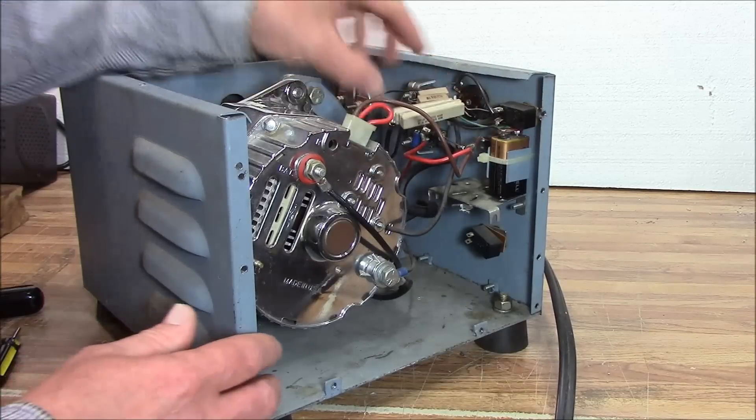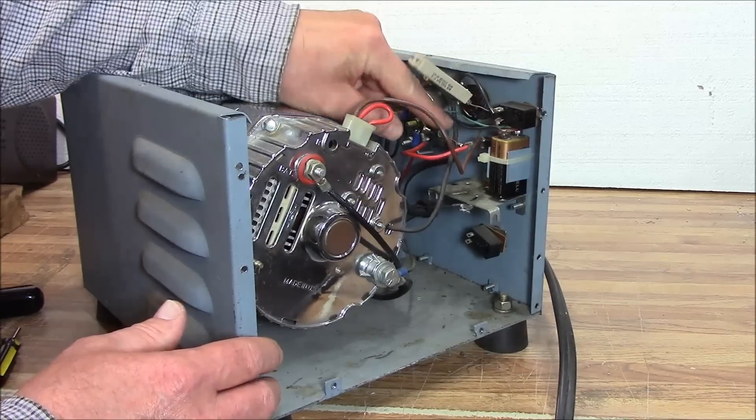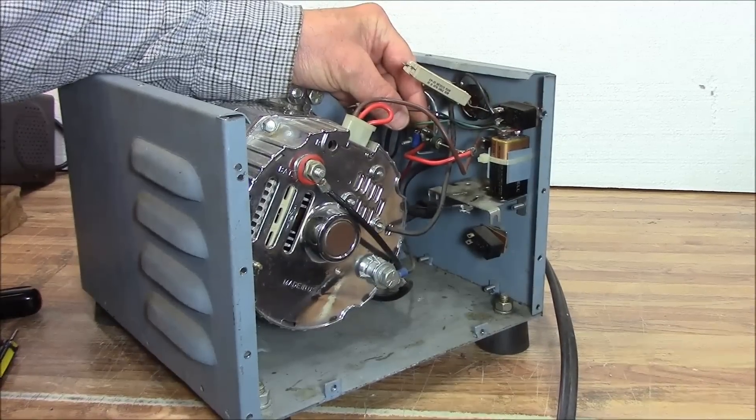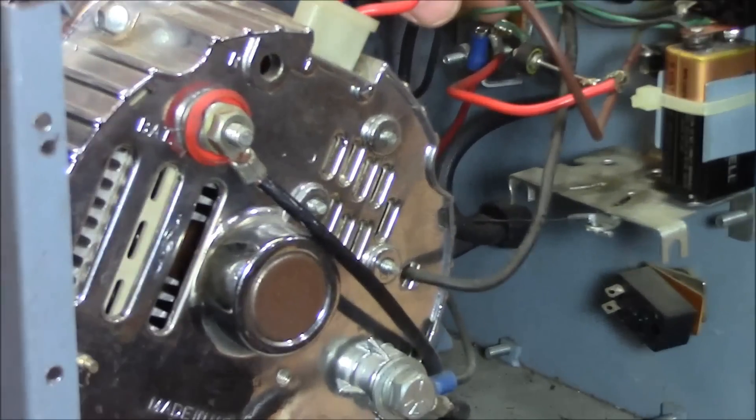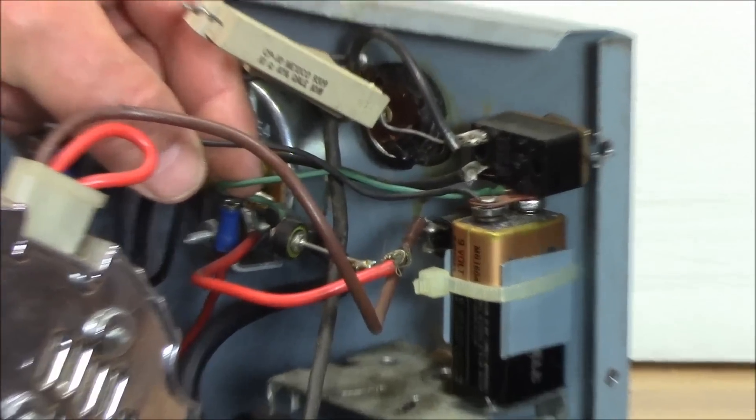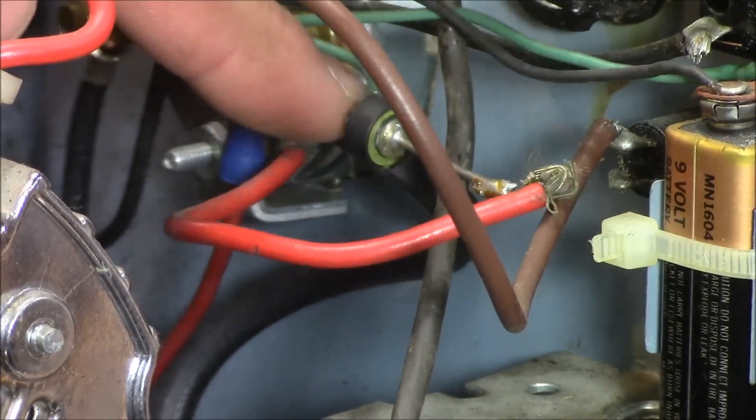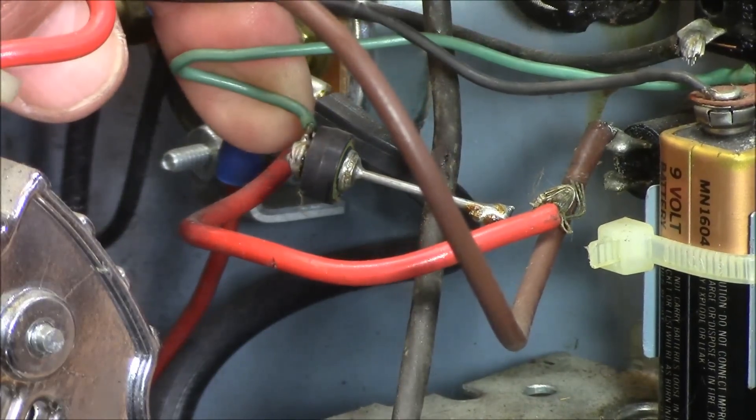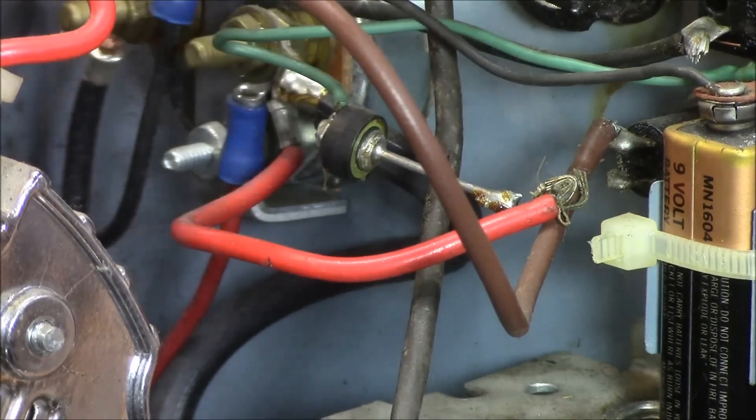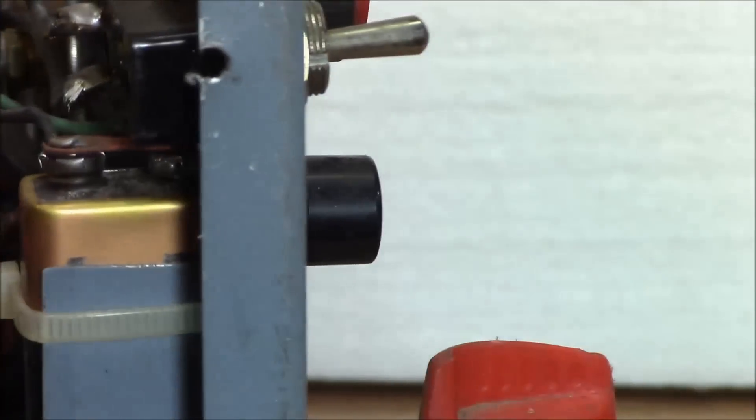I have a little diode. Let's get you in so you can see that better. Right here, this is a little diode. Diodes are one-way gates. They let power flow one way but not back the other way.